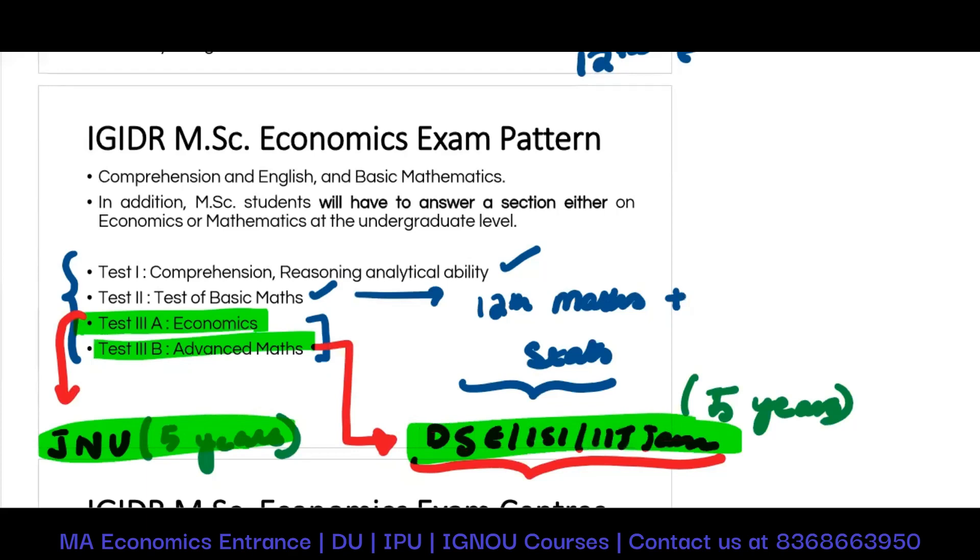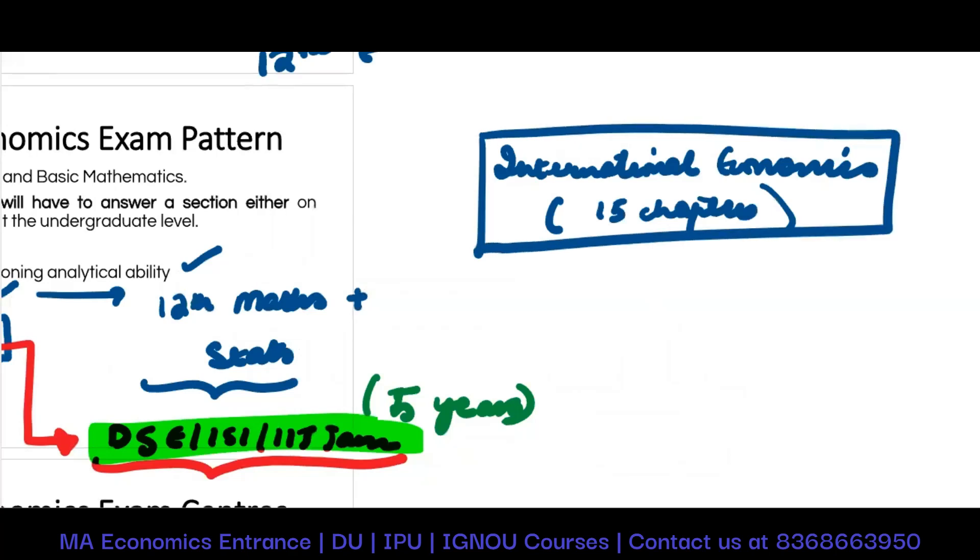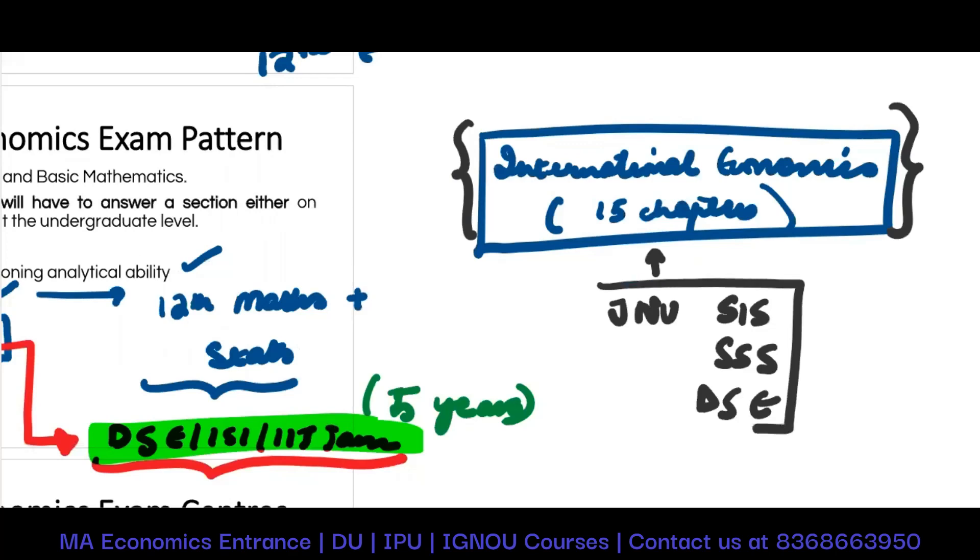When we talk about economics, another very important topic that comes in economics is international economics, also called trade. As you know that I covered the entire international economics in 15 chapters. If you have gone through these 15 chapters, no one can stop you from clearing the part of international economics. This is like a complete package in itself. This international economics 15 chapters are enough for you to clear JNU, SIS, SSS, DSC, ISI, IGIDR - any exam you pick up, the international economics part will not be over and above this part.